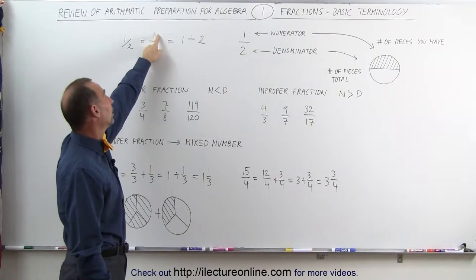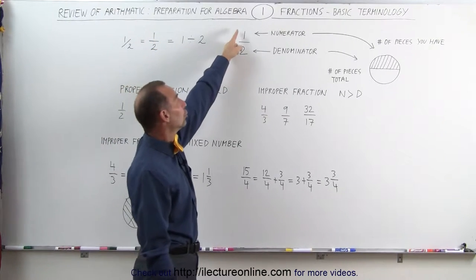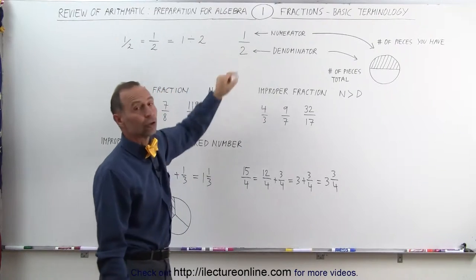The number in the top is called the numerator. The number at the bottom is called the denominator.